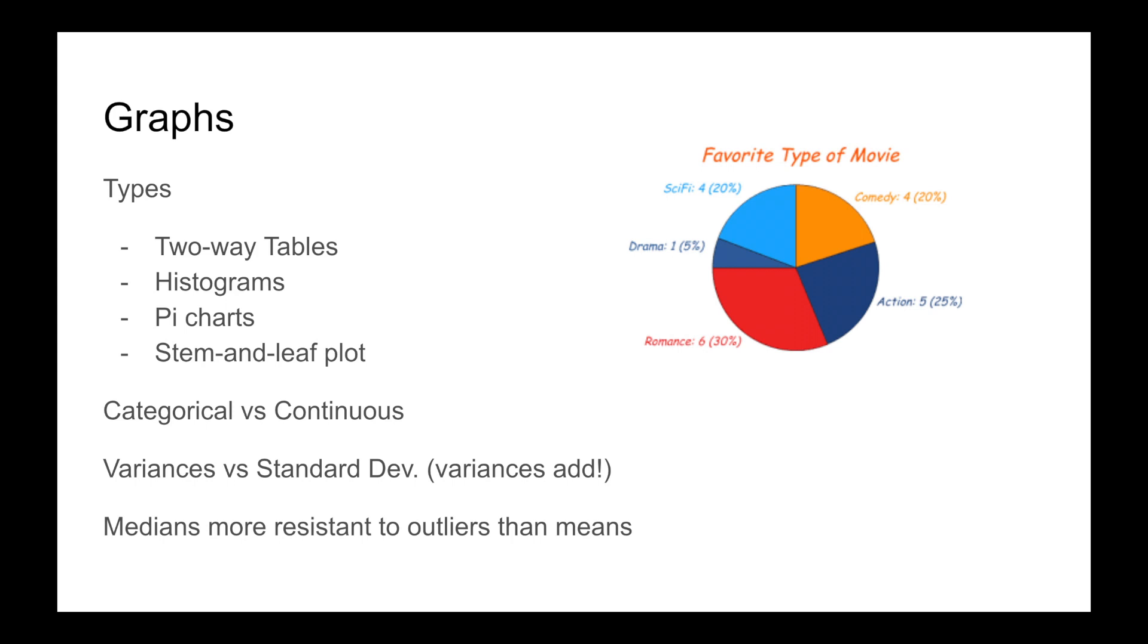Understand standard deviation versus variance as measures of spread. Variance is the square of standard deviation. Additionally, variances add. They always add. I remember because it looks a lot like the Pythagorean theorem. There's apparently some cool linear algebra explanation behind that, but I'm not going to go over it in this video. Also, means are more affected by outliers than medians are. That also comes up a lot.